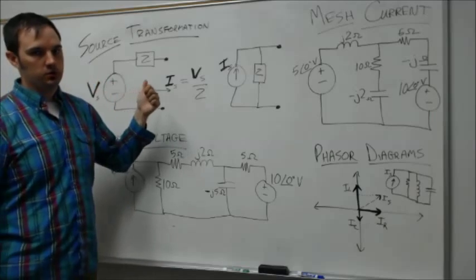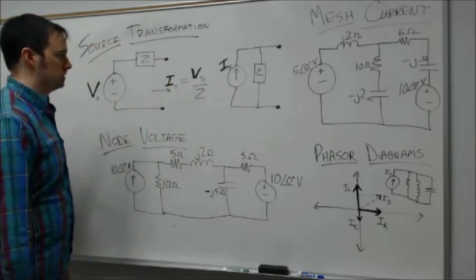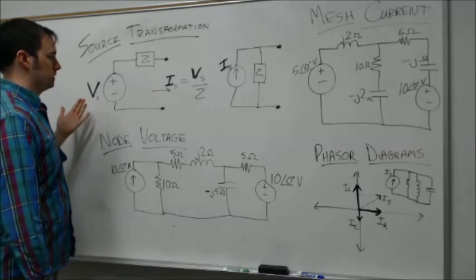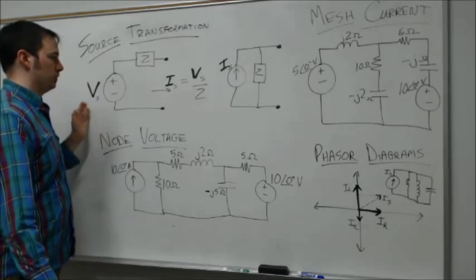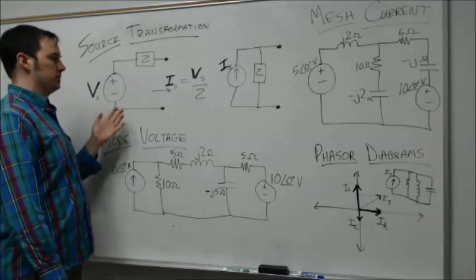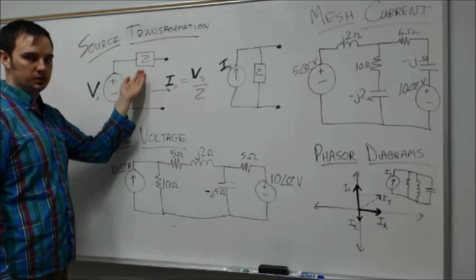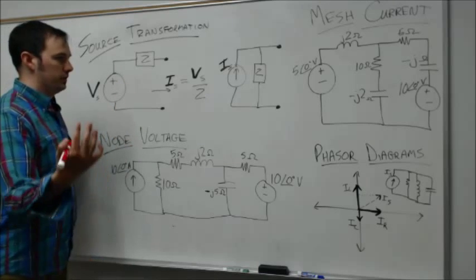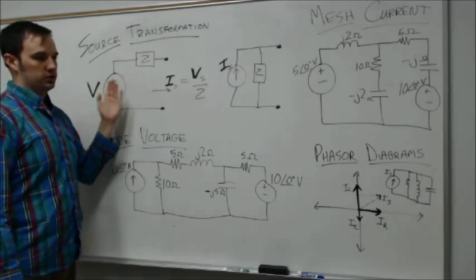For source transformation, it's very similar to what we did previously when dealing with resistive networks, except now we're working in the frequency domain with phasor values for voltage and current, relating those through complex impedance. The impedance groups together the response from resistors, inductors, and capacitors.